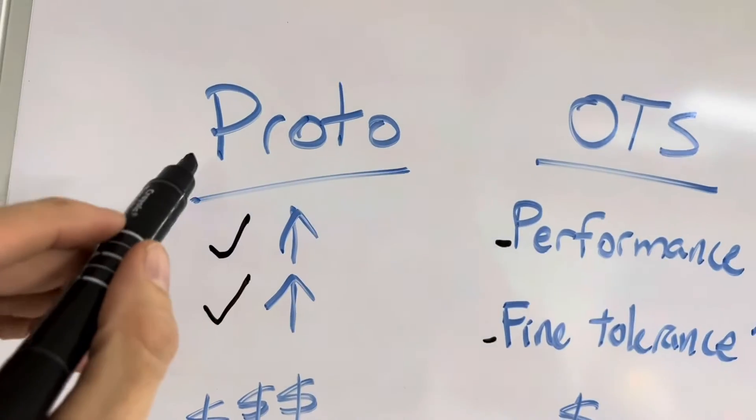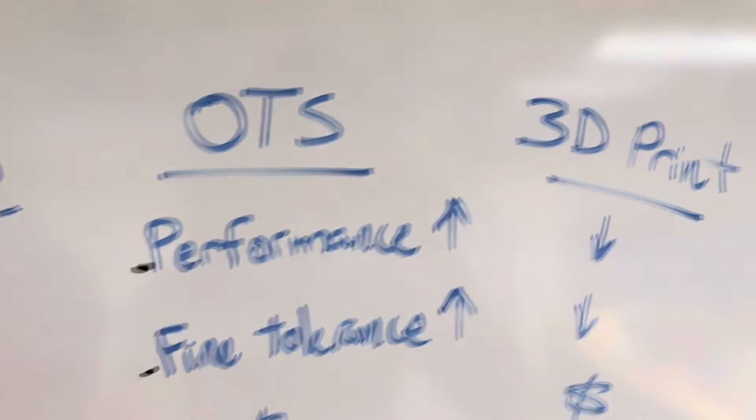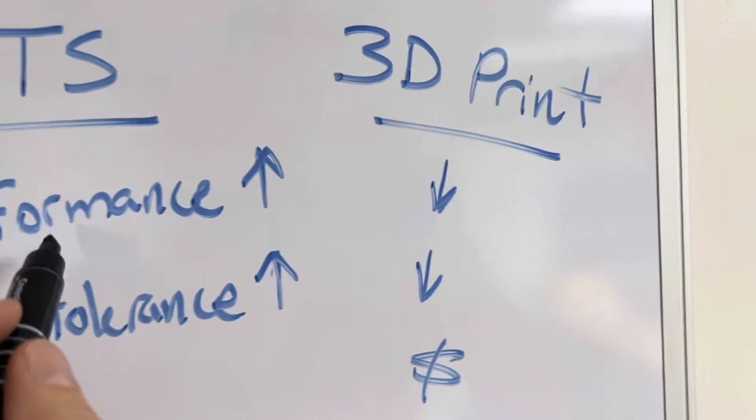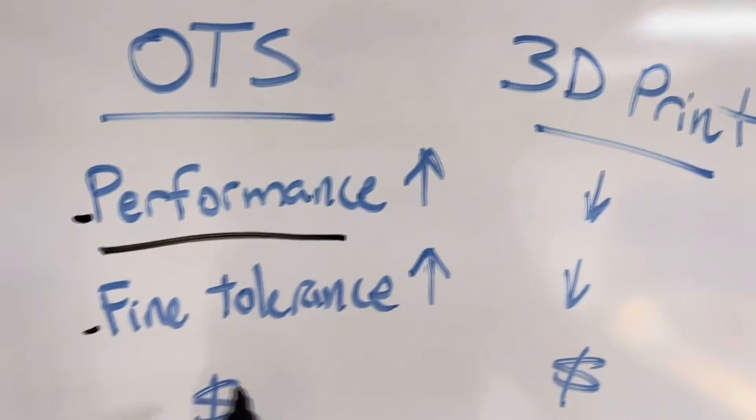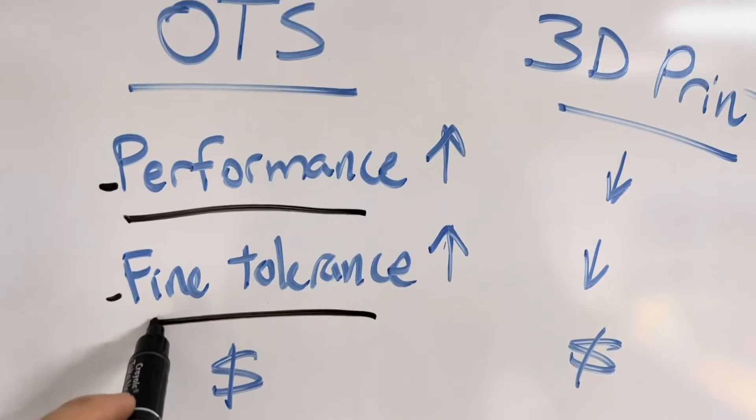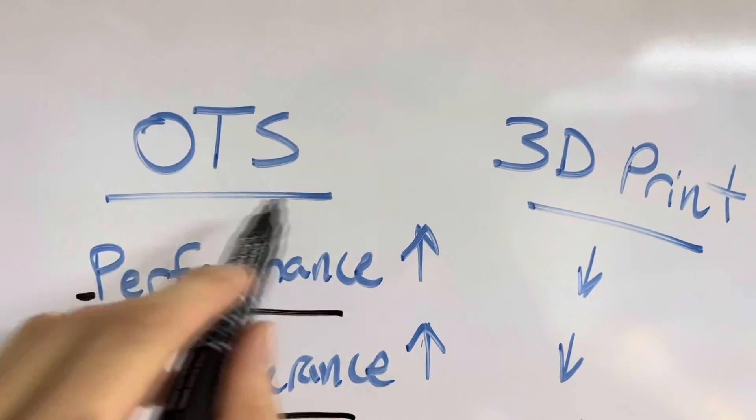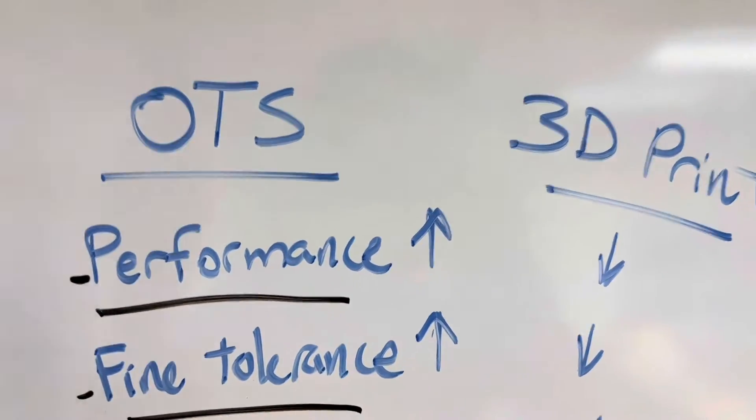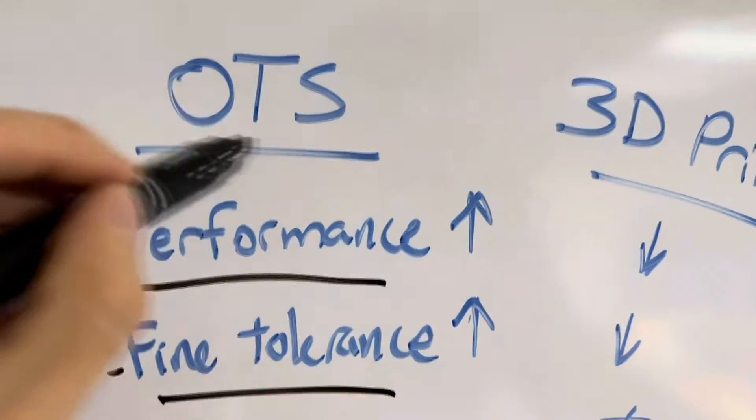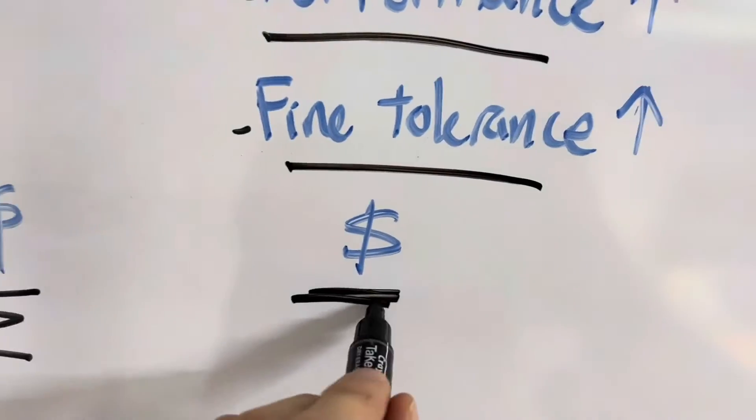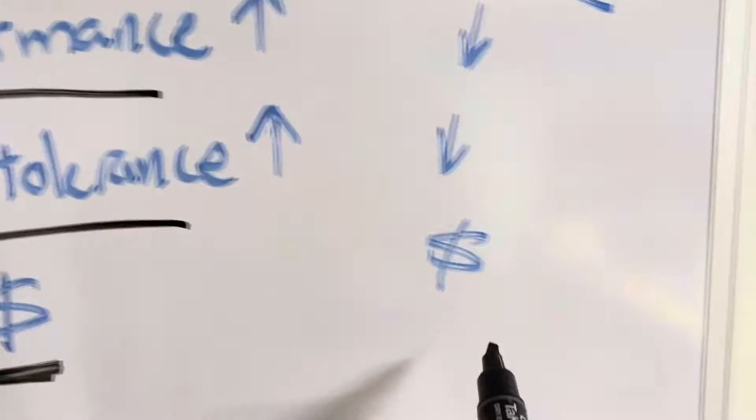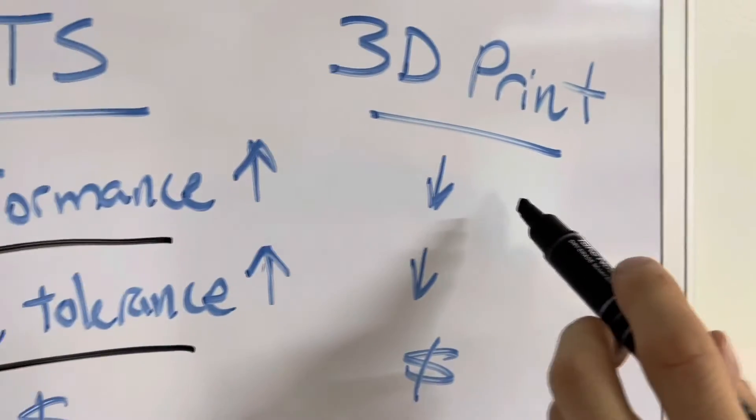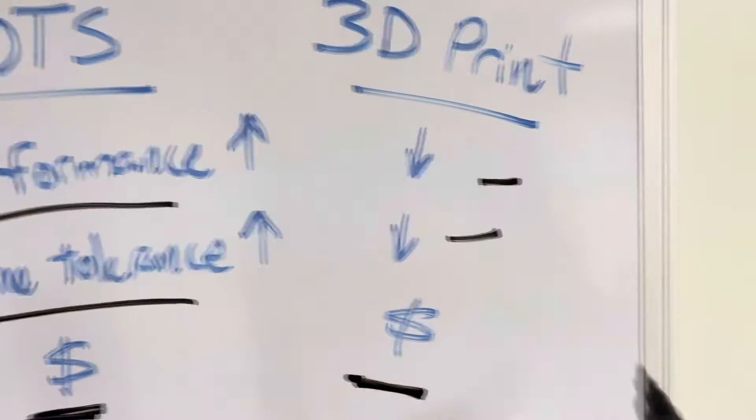As off-the-shelf designs, traditionally manufactured at scale commodities are affordable. But with 3D prints, this is the affordable one, this is the expensive one, and this is also affordable, but you just don't have the performance and the fine tolerance.